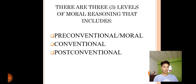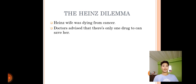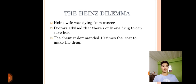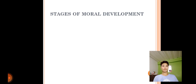Before discussing the stages, we talk about Heinz's dilemma. Heinz's wife was dying from cancer, and the doctor advised that there was only one drug that could save her. The chemist demanded ten times the cost to make the drug, but Heinz couldn't afford it. The chemist didn't listen to Heinz's begging and pleas, so Heinz stole it from the premises that night.